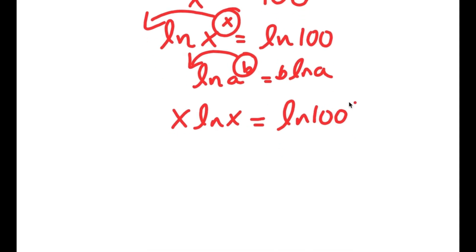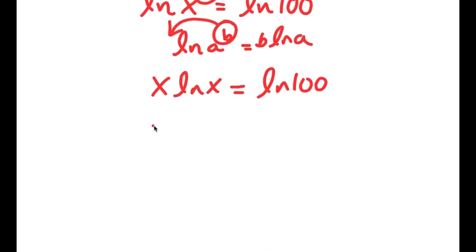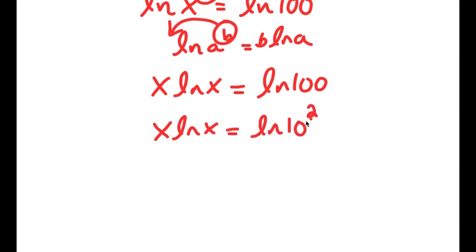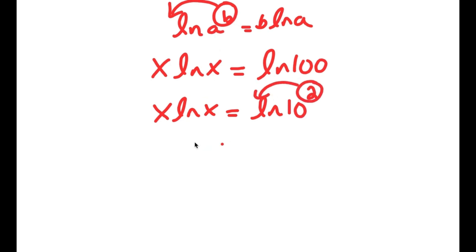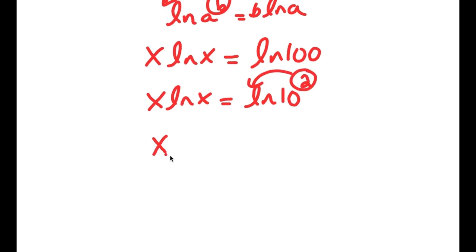Now, ln 100 is the same as ln of 10 squared. Applying the logarithm power rule again, I move the 2 to the front, so I get x times ln x equals 2 times ln 10.